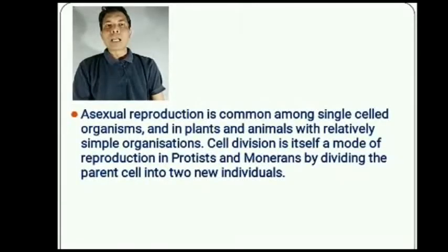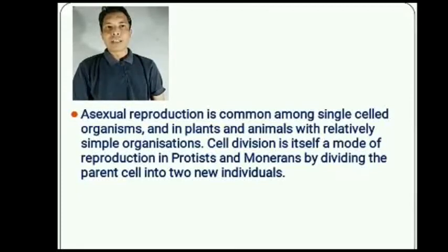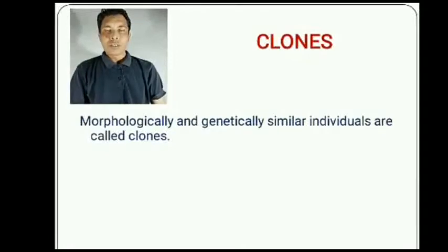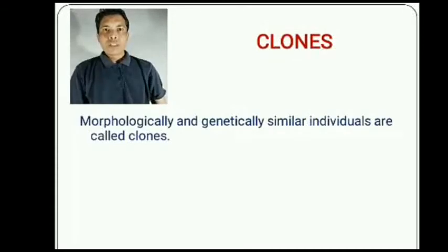Asexual reproduction is common among single-celled organisms and in plants and animals with relatively simple organizations. Cell division itself is a mode of reproduction in protista and monerans, dividing the parent cell into two new individuals. Morphologically and genetically identical individuals are called clones.